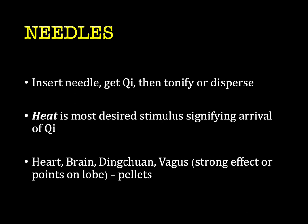We tend not to needle the heart, brain, dingshan, or vagus because of their strong effect, or points on the lobe since the lobe is flabby. For these points, we substitute pellets. However, they are not contraindicated to needle.